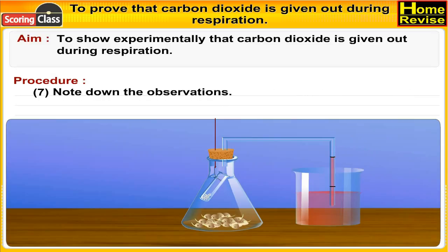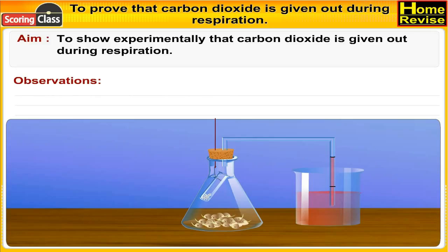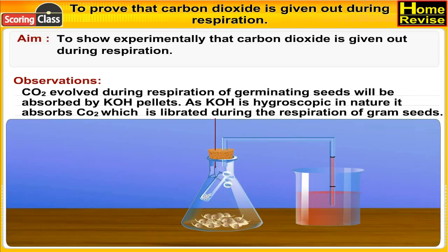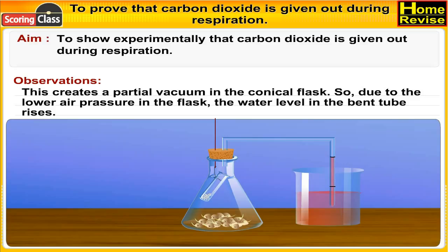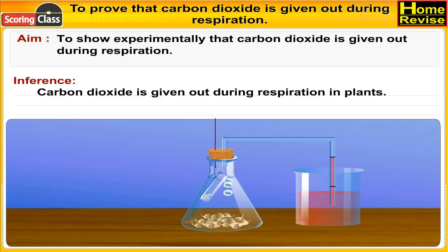Observations: CO₂ evolved during respiration of germinating seeds will be absorbed by KOH pellets. As KOH is hygroscopic in nature, it absorbs CO₂ liberated during the respiration of gram seeds. This creates a partial vacuum in the conical flask, so due to the lower air pressure in the flask, the water level in the bent tube rises. Inference: Carbon dioxide is given out during respiration in plants.